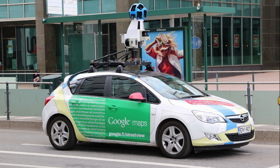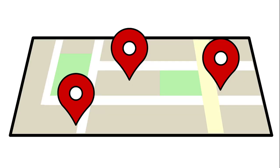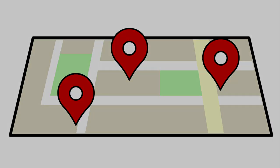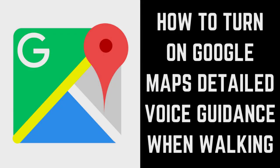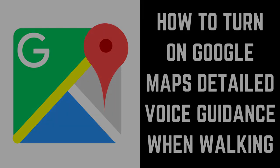While the feature can be helpful for everyone, especially in higher traffic areas in larger cities, it was specifically created to help people with visual impairments. Now let's walk through the steps to turn on Google Maps detailed voice guidance when using walking navigation.